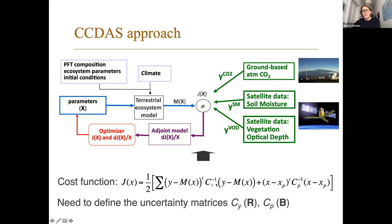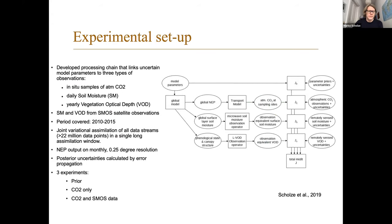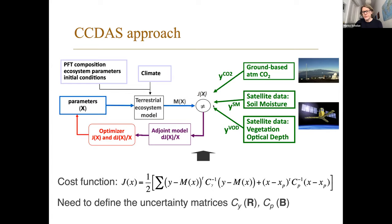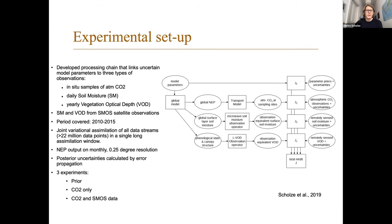For both the observations - that's what I denote by CY, or in NWP it's usually called the R matrix - and also on the prior parameters, that's the B matrix. The experimental setup is where we developed a process chain linking the model parameters to the three types of observations: in-situ flask samples of CO2, daily soil moisture observations, and yearly vegetation optical depth observations. Both soil moisture and VOD are from SMOS, and we look at the period covering the years 2010 to 2015 - six years.